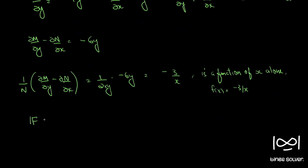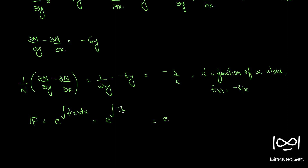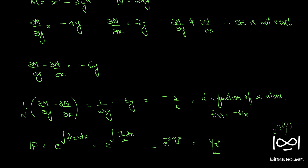In such cases the integrating factor is e raised to the integral of f(x) dx. So e raised to the integral of minus 3 by x dx. This becomes e raised to minus 3 log x. Using logarithm properties, e raised to log(1/x³) gives us 1 by x³. So we got our integrating factor as 1 by x³.